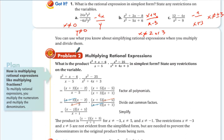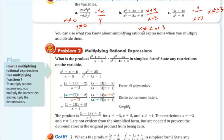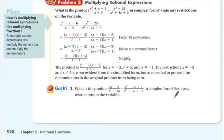You can use what you know about simplifying rational expressions when you multiply and divide them. So here we have two rational expressions that we are going to multiply. If I multiply this quadratic times this quadratic and this linear times this quadratic, I am going to make a mess. I don't want to make a mess. What I want to do is I want to simplify first.